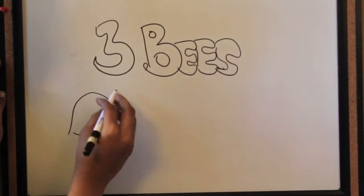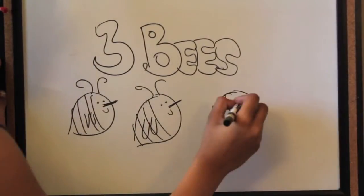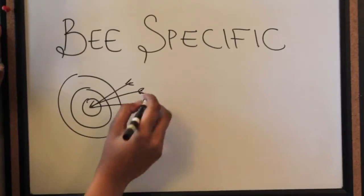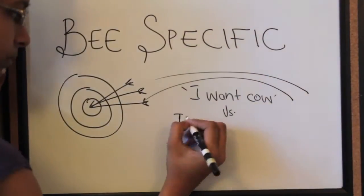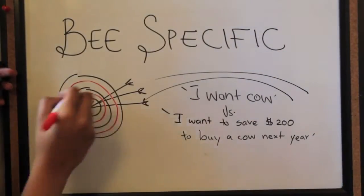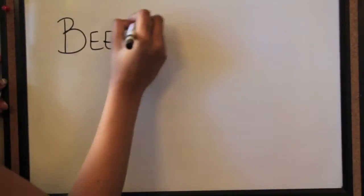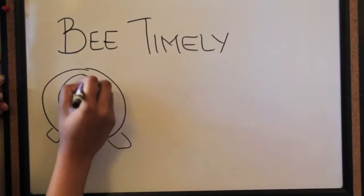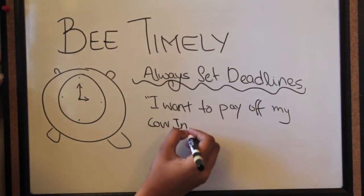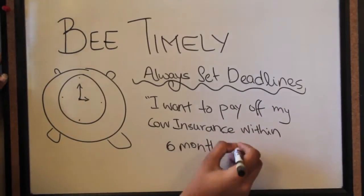So for goal setting guidelines, always remember the three B's. Okay, so be specific. I want a cow, versus I want to save $200 to buy a cow next year. Be timely. Always make sure you set deadlines. This will keep you motivated to work towards your goals. For example, I want to pay off my cow insurance within six months.